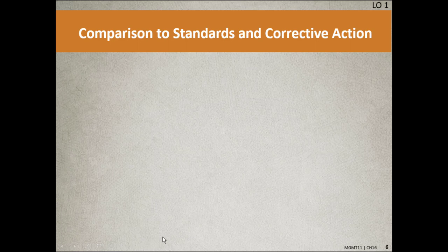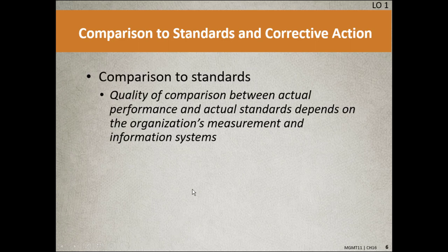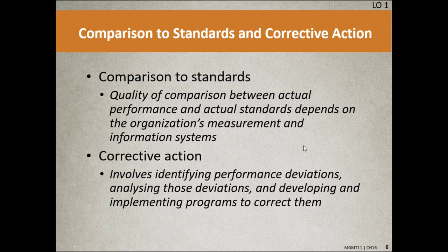Now we're getting into comparison to standards and corrective action, on page 355. The quality of comparison between your actual performance and your standard depends on the company's measurement and information systems. Corrective action involves identifying performance deviations, analyzing those deviations, and developing and implementing programs to correct them. This goes back to that closed loop — it never, ever changes.